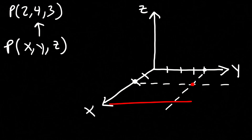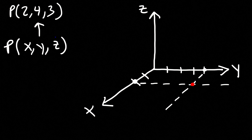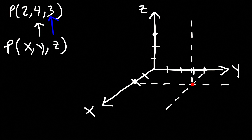So in the xy-plane, I have the point 2, 4. Now the last thing I need is the z-coordinate, which is 3. So let's go up 3 units along the z-axis. I'm going to draw a dashed line parallel to the z-axis and go up 3 units to get the point 2, 4, 3.